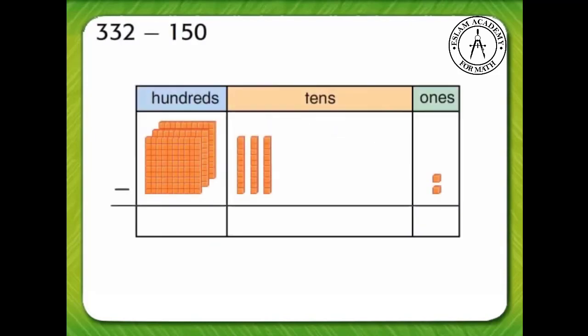First, let's look at the numbers in the ones column. How many ones are there in 332? Two. How many ones are we going to take away when we subtract 150? That's right, zero. Tell me what 2 minus 0 equals. If you said 2, you're correct.